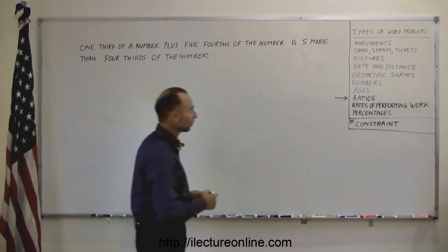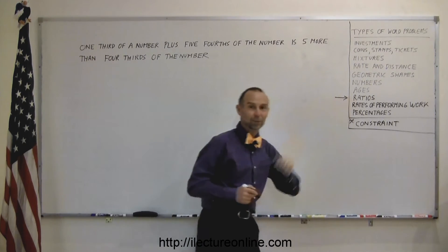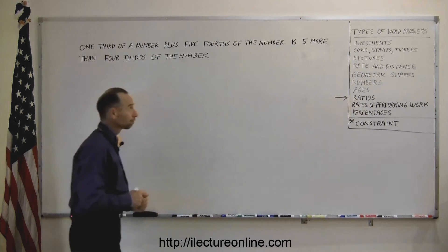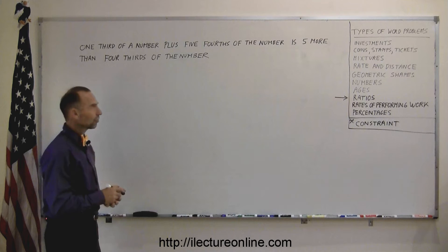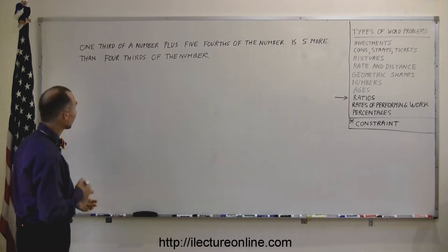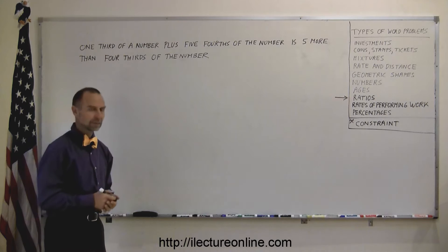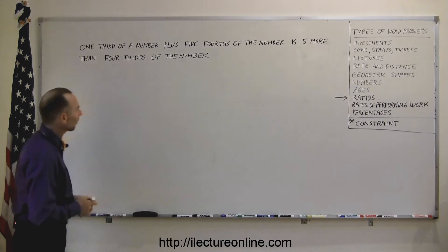And another good example for you, dealing with word problems, and in particular word problems dealing with ratios. And here's the word problem: One-third of a number plus five-fourths of the number is five more than four-thirds of the number. You sit there and go, whoa, where do I start?